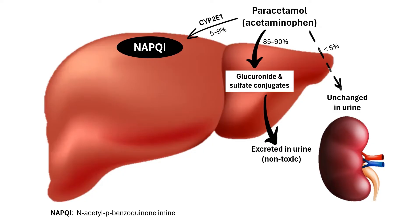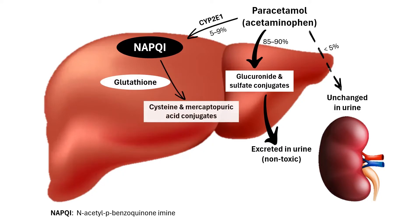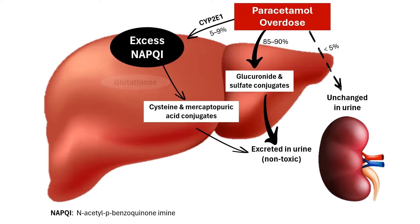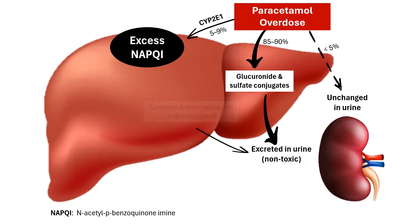This is quickly neutralized by glutathione, an antioxidant present in the liver, to form cysteine and mercaptopuric acid conjugates. However, in cases of overdose, the excess NAPQI overwhelms and depletes glutathione stores, leading to the accumulation of toxic levels of NAPQI.